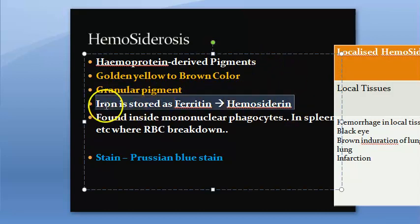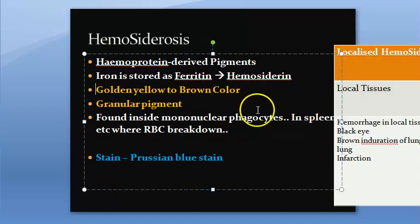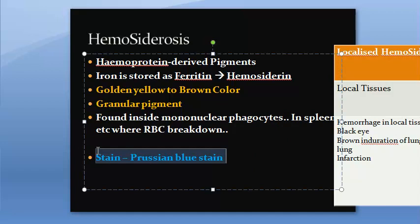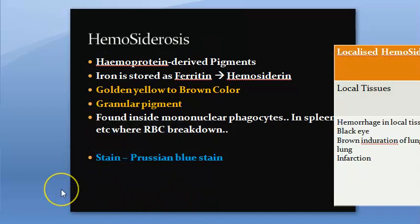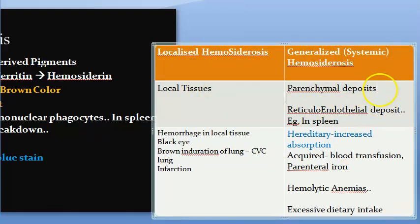Hemosiderin is found inside the mononuclear phagocytes — for example, in the spleen where RBC breakdown occurs. The stain used for hemosiderin is Prussian blue stain. In generalized hemosiderosis, there will be both parenchymal deposits and reticuloendothelial deposits in organs like the spleen, bone marrow, and liver.